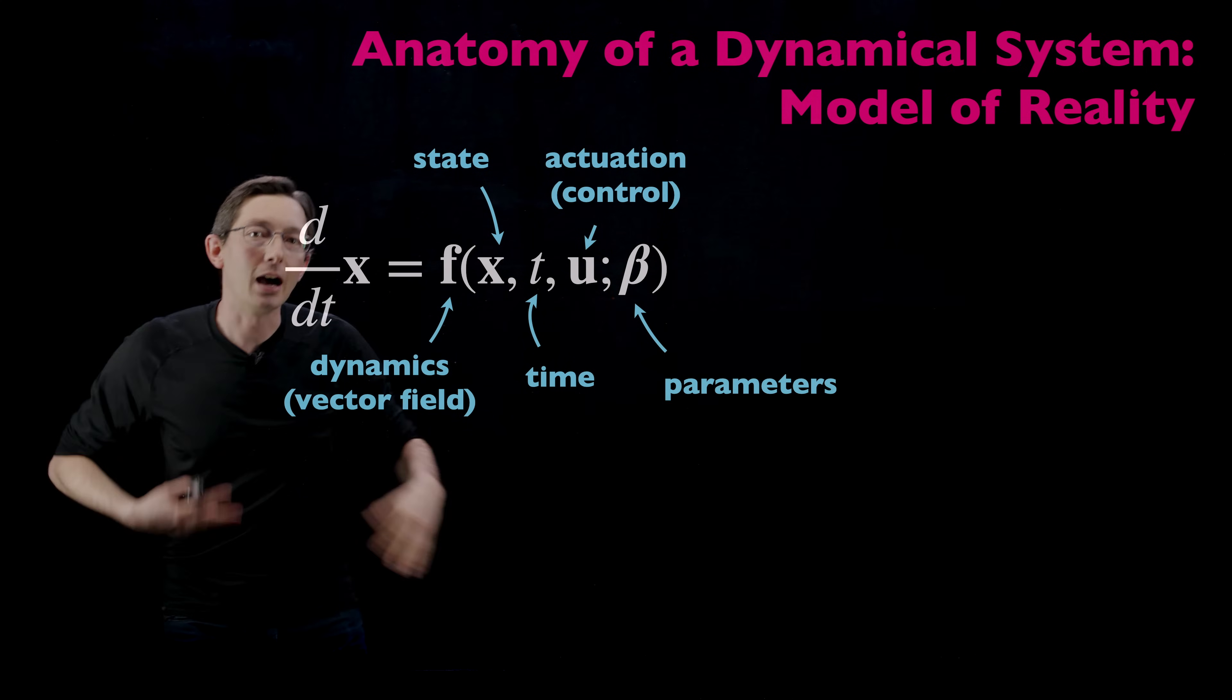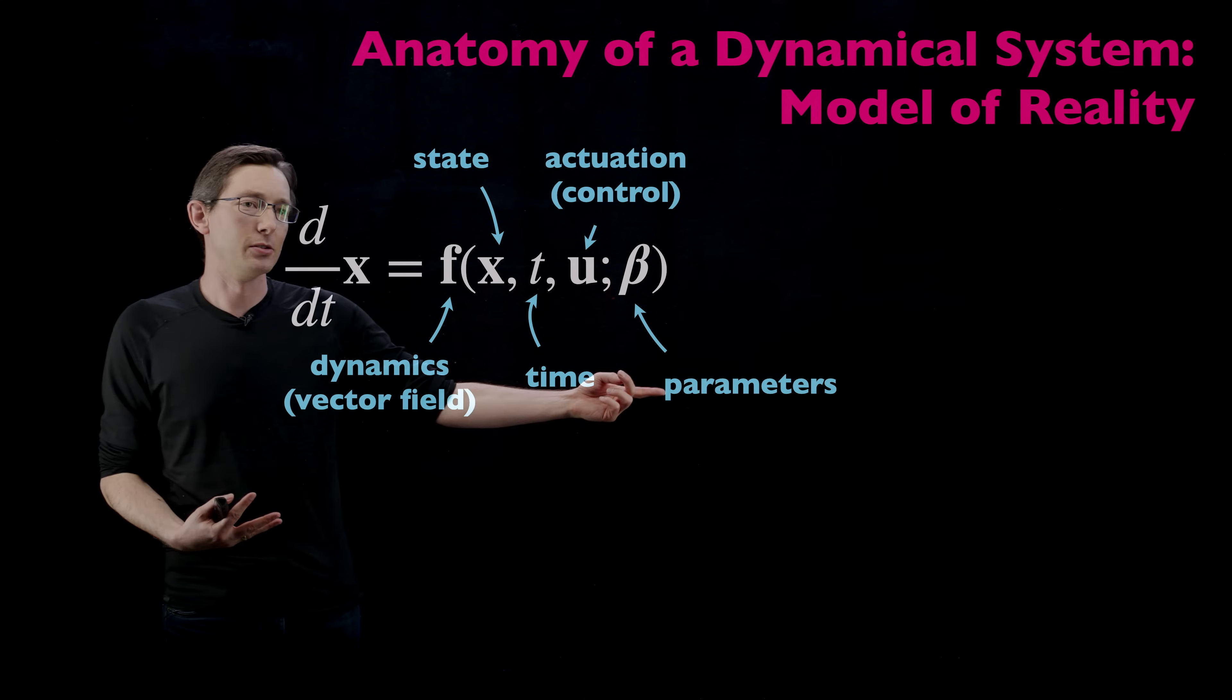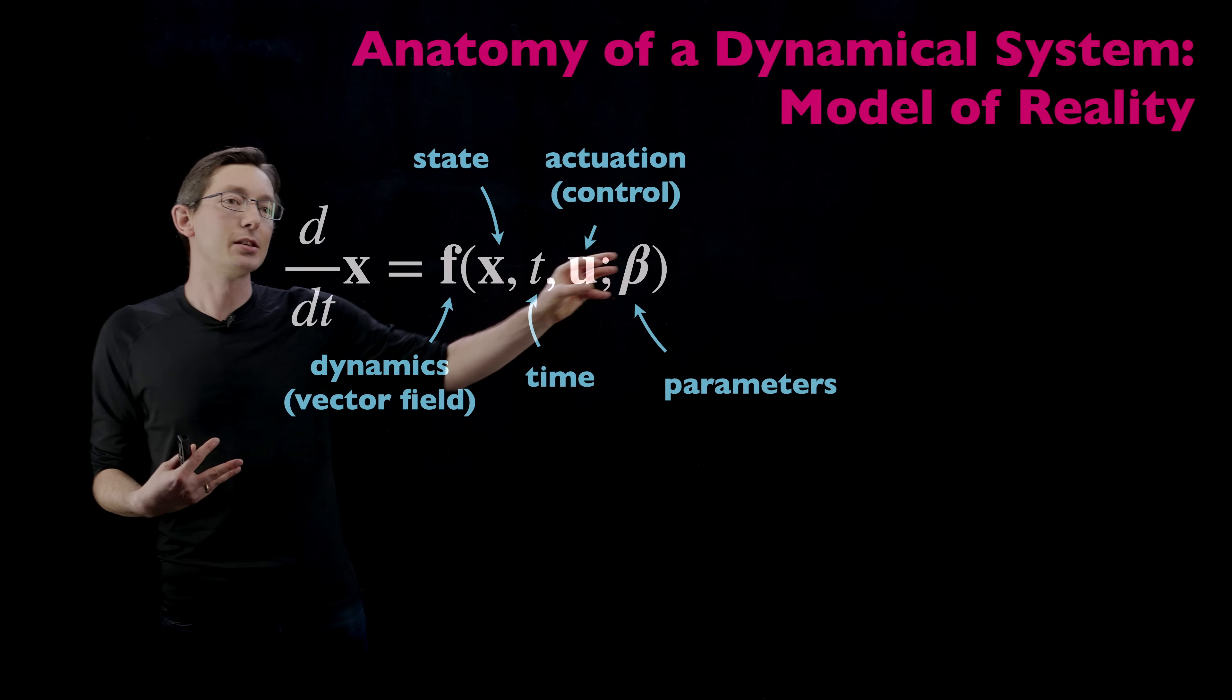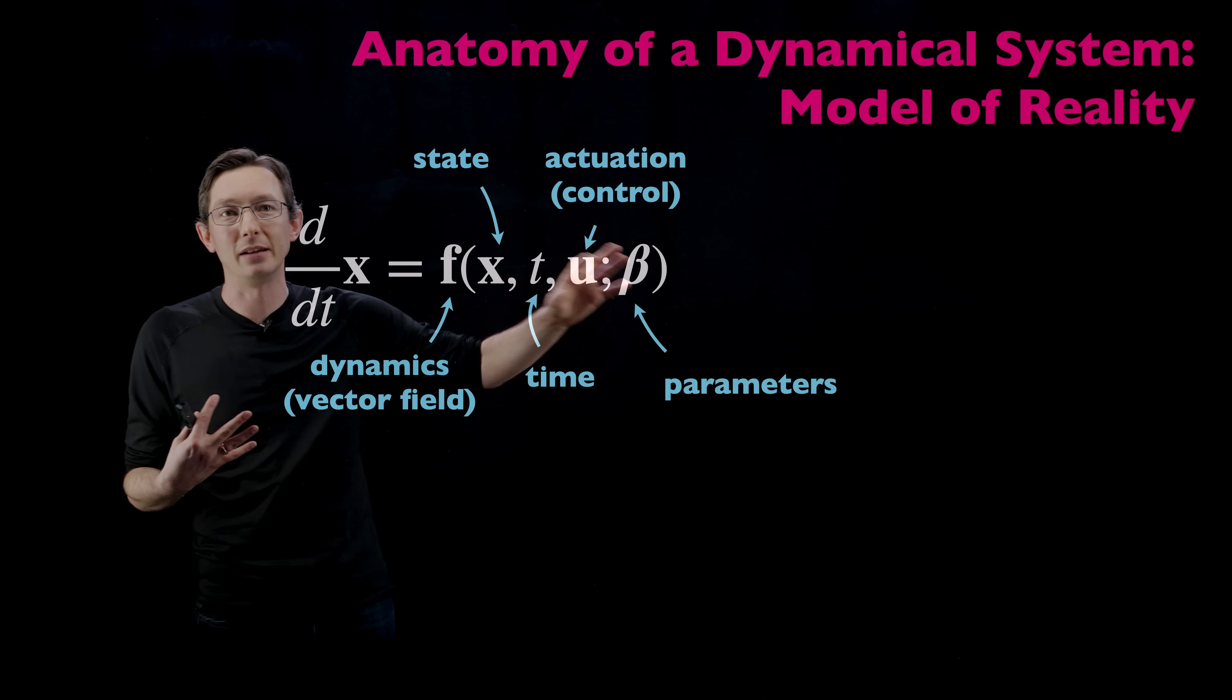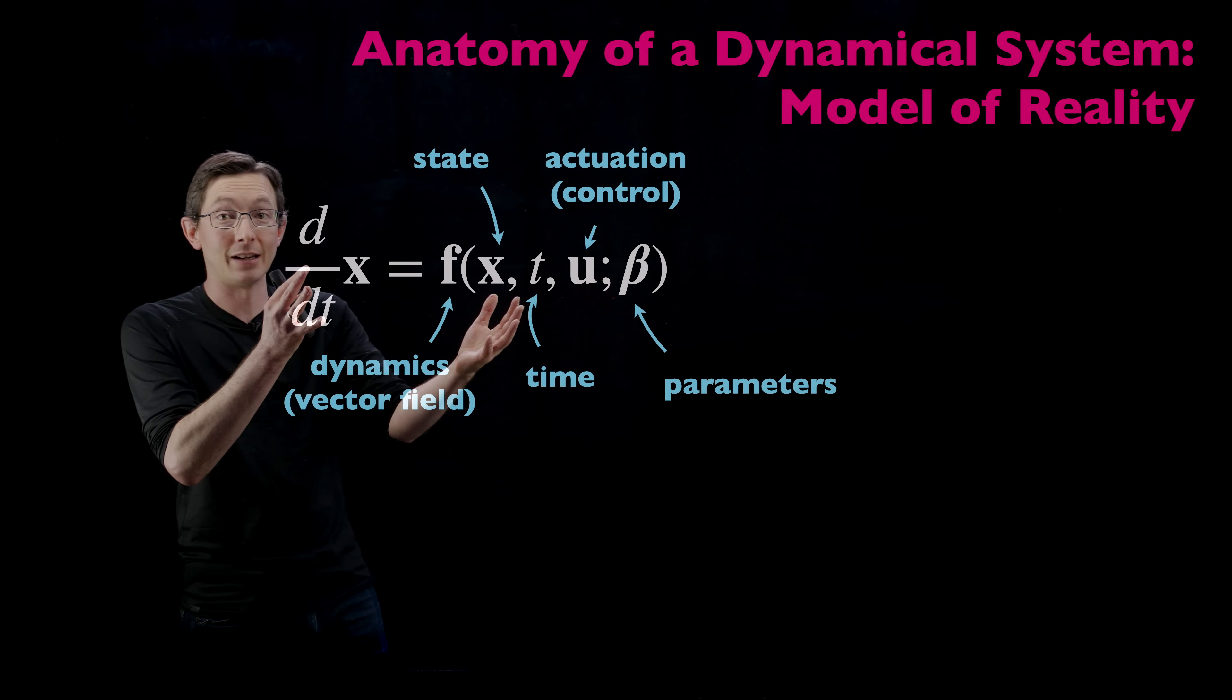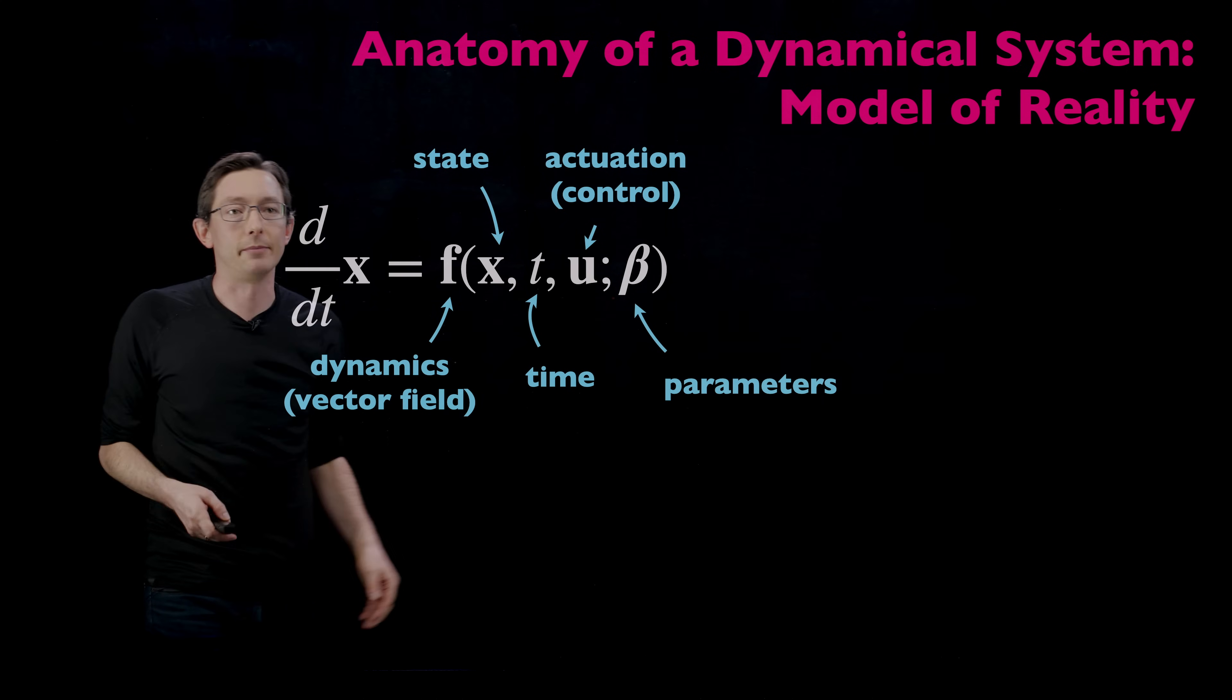Beta are all of the other parameters of the system that I don't explicitly have control over but I might want to analyze and understand. In the pendulum example, this might be the length of the pendulum arm or the mass of the pendulum. And so these beta parameters, we want to understand the explicit dependence of these dynamics on those beta parameters. As I change those parameters, I might get really big changes in the dynamics called bifurcations. So these beta parameters are super important. That's our dynamical system.